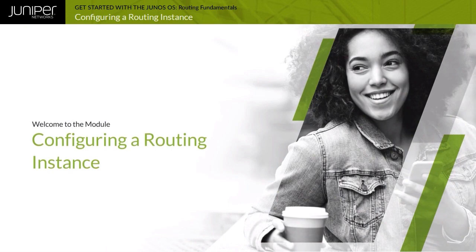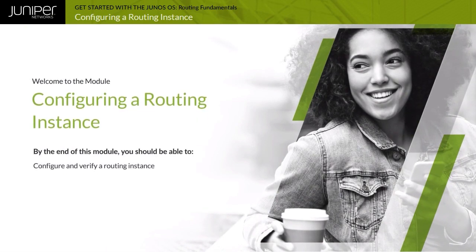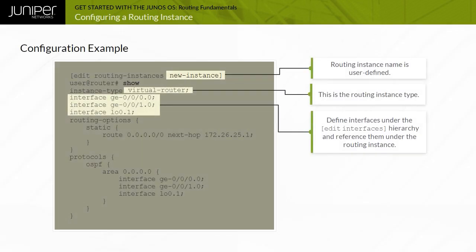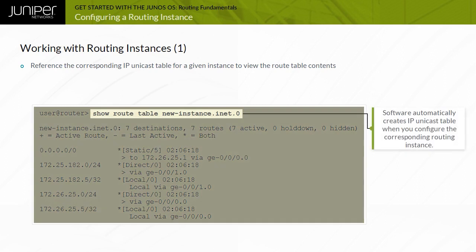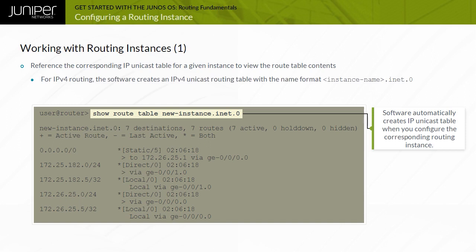Welcome to the Configuring a Routing Instance module. By the end of this module, you should be able to configure and verify a routing instance. The example illustrates basic routing instance configuration. Once you configure a routing instance and the device learns the routing information within the instance, Junos OS automatically generates a routing table. If you use IPv4 routing, the software creates an IPv4 unicast routing table.